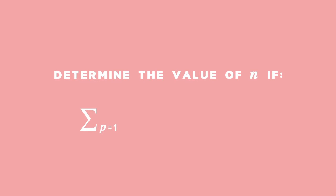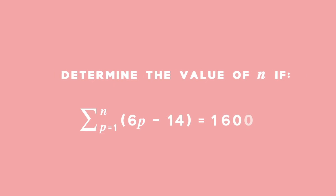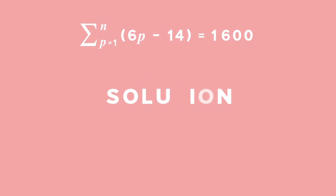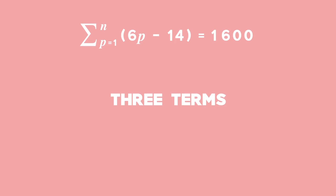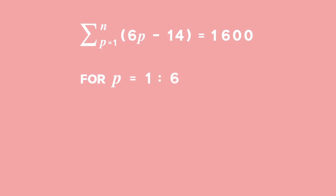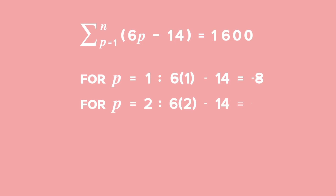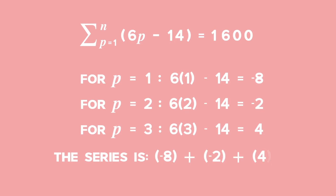Example 2: Determine the value of n for an arithmetic series. Determine the value of n if the sum of all terms from p equal to 1 to p equal to n of 6p minus 14 is equal to 1,600. Solution: We must first expand the series to find the first three terms. For p equal to 1, 6p minus 14 equals negative 8. For p equal to 2, 6p minus 14 equals negative 2. For p equal to 3, 6p minus 14 equals 4. The series is negative 8 plus negative 2 plus 4, and so on.